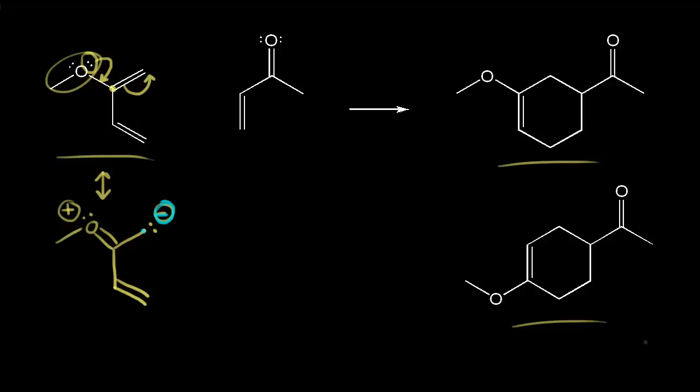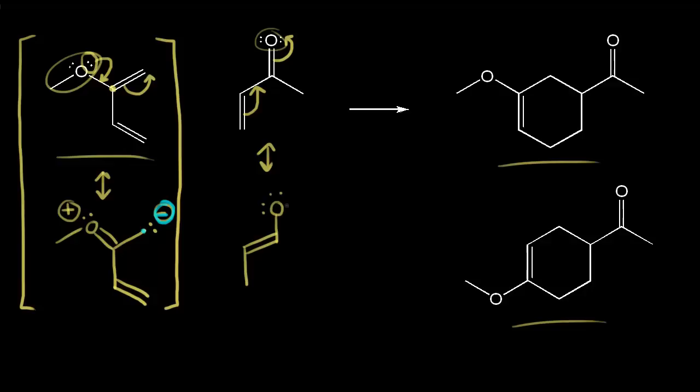Let's look at the dienophile next. We know that this oxygen is electronegative, so electron density is going to flow towards that oxygen. I could take these electrons and move them into here, and these electrons come off onto the oxygen. So let's draw that resonance structure. We would have a double bond here, and our oxygen would have three lone pairs of electrons around it, which gives that oxygen a negative one formal charge.